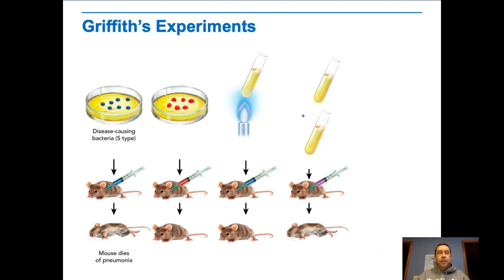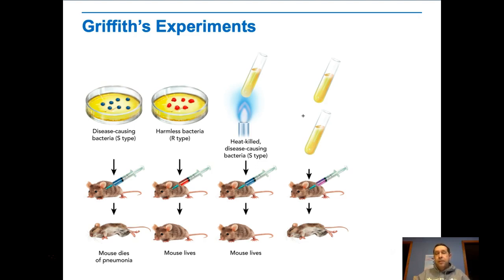When you took the smooth strain and injected them into the mouse, the mouse dies from pneumonia. When you took the rough strain and injected those into the mouse, the mouse lives. He then took and killed some of the smooth strain bacteria, injected those into the mouse, and the mouse lives. Again, that makes perfect sense.